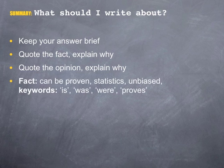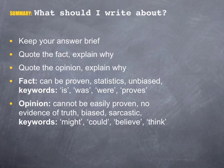Remember that a fact is something real that can be proven by statistics — it is unbiased. Look for keywords like 'is,' 'was,' 'were,' and 'proves.' An opinion is what the writer or someone else thinks and cannot be easily proven; there will be no evidence of truth and the statement may be biased or sarcastic. Look for keywords such as 'might,' 'could,' 'believe,' or 'think.' Therefore, one effective way to identify fact and opinion in media articles is to look for words which show certainty for facts, or doubt for opinions.